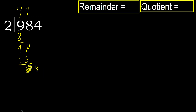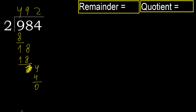Bring down 4. 2 multiplied by 5 is 10 — it is greater. 2 multiplied by 2 is 4 — it is not greater. Subtract. Next. There are no more digits, so we finish.